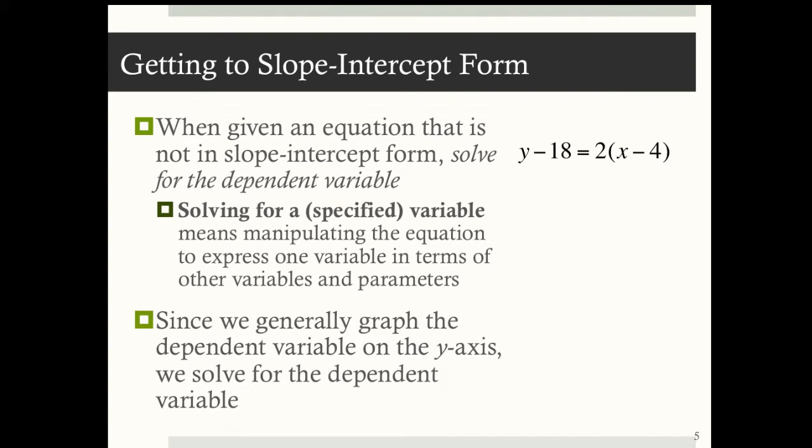So for example, suppose you have y minus 18 equals 2 times x minus 4. What we want to do is get that y all by itself. So I'm going to add 18 to both sides. Remember, whatever you do to one side of an equation, you have to do to the other. And that yields y equals 2x plus 10 after simplifying.